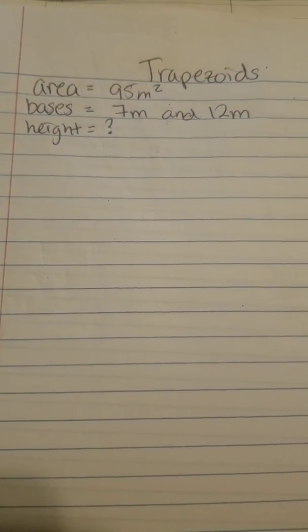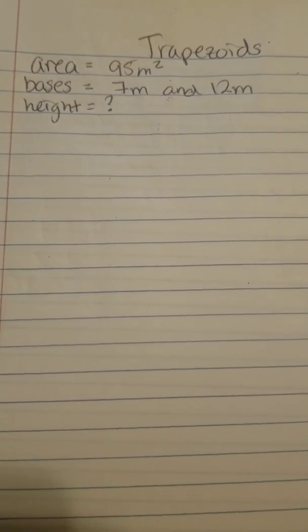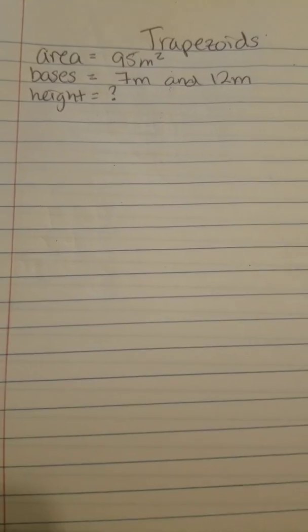So what happens whenever they want you to find the height of a trapezoid when they give you the area and they give you two of the bases? All you have to do is take the information that they give you and plug it into the formula.